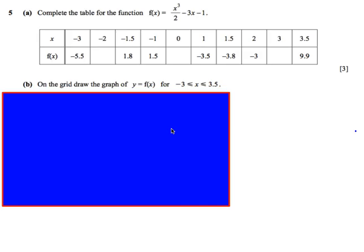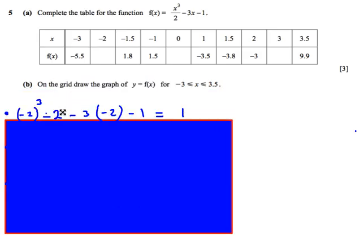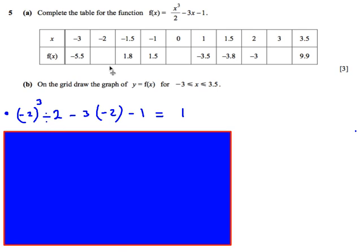First off, complete the table for the function x cubed over 2, take away 3x, take away 1. And we've got some spaces missing. So this should be pretty straightforward. All we really need to do is just remember to use the brackets on the calculator. So this first one for minus 2, as long as we put the minus 2 in the brackets, minus 2 cubed, divided by 2, take away 3, open brackets, minus 2, close brackets, take away 1. The calculator works out the answer as 1 for us. That's pretty much the only mistake we can make on this first part of the question.